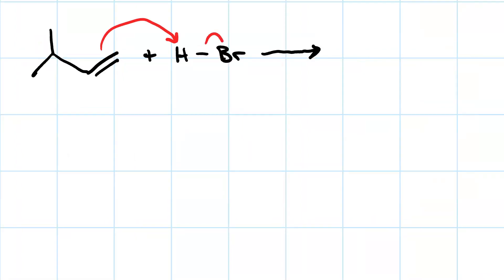proton transfer. This produces a bromide ion from the acid. And we also get a carbocation.